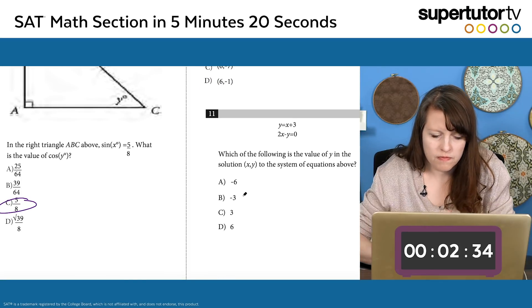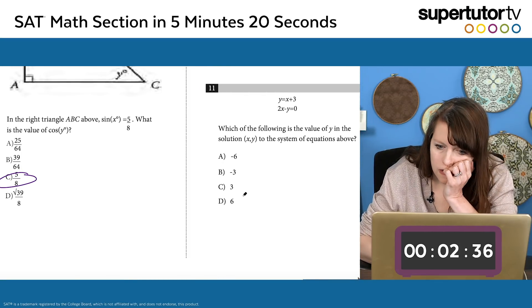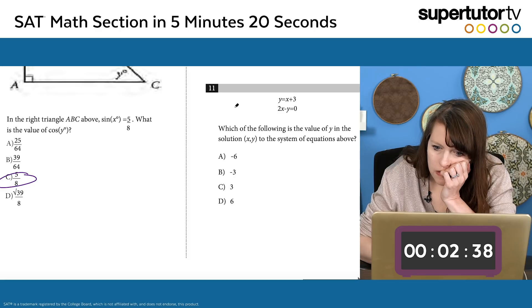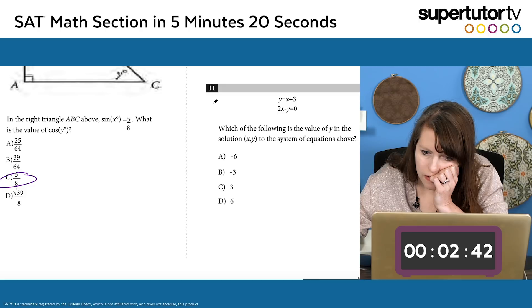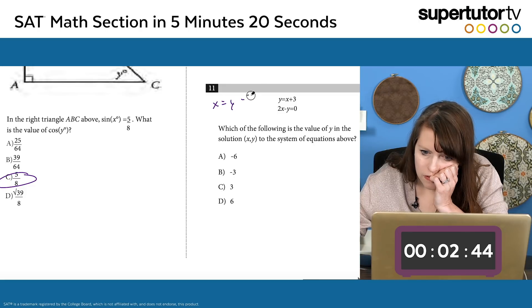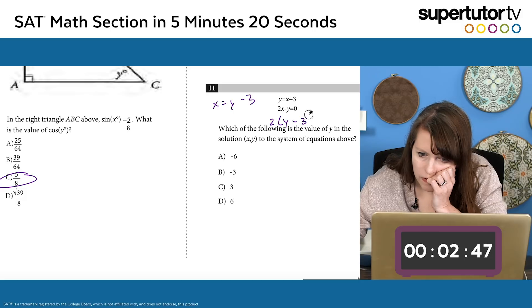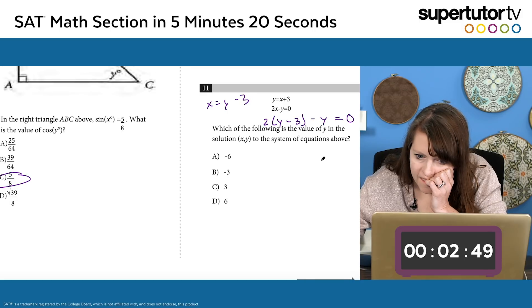Which of the following is though a value of y in the solution to the system above? So isolate to eliminate. That means I want to get x by itself. So I'm going to isolate the x. x equals y minus 3. I'm now going to plug that in. 2 times y minus 3 minus y equals 0. 2y minus 6 minus y equals 0. The y becomes 1y, and then y equals 6, done.